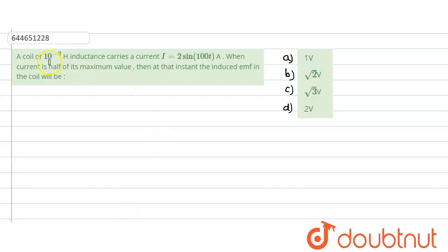Hello everyone, let us start with our question. In this question, what is given? A coil of 10 to the power minus 2 inductance carries the current of I equals to 2 sine of 100 T amperes. When the current is half of its maximum value, then at that instant induced EMF in the coil would be equals to...